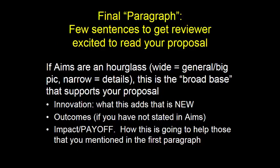After you've listed the aims, you want a final paragraph with a few sentences to get the reviewer excited to read your proposal. Think about your aims as an hourglass: you start at the wide part, which is the really general big-picture — like that IOM report saying this area of research is so important. Then you narrow down to the specific aims, but then you need a broad base so it doesn't tip over. That wide base supports your proposal. Here you might hint at the innovation, talk about outcomes, and maybe a one-sentence payoff — how is this going to help those people? You can refer back to the first paragraph, talking about those millions of people who will benefit from this research.